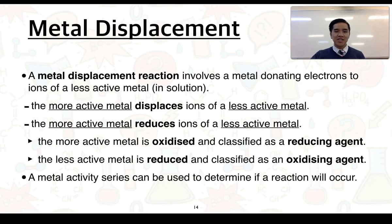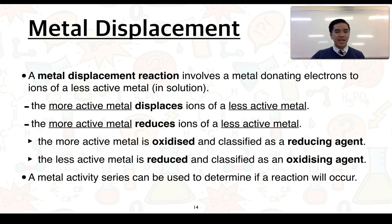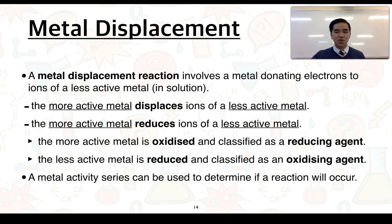Metal displacement reactions essentially involve one metal donating electrons to another metal that's in the form of an ion, and that metal ion has to be less active or less reactive than the one donating electrons. We say that the more active metal displaces and reduces ions of a less active metal. The more active metal is oxidised and is therefore classified as a reducing agent, while the less active metal ions are reduced and classified as an oxidising agent. We can use a metal activity series to determine whether a reaction will occur, and then write a balanced equation using half equations.